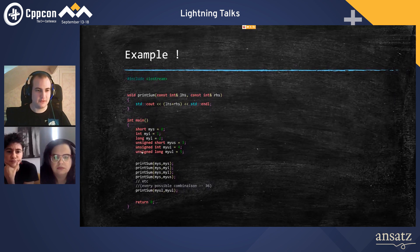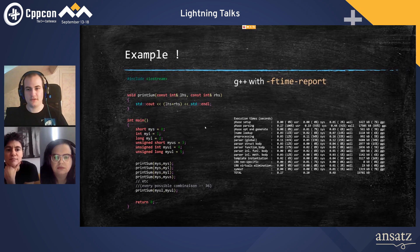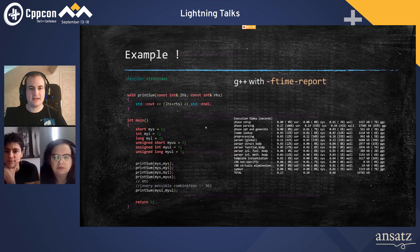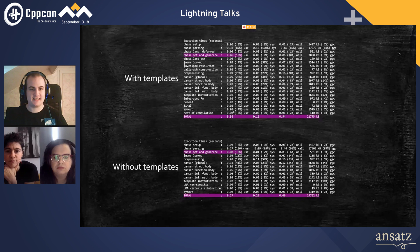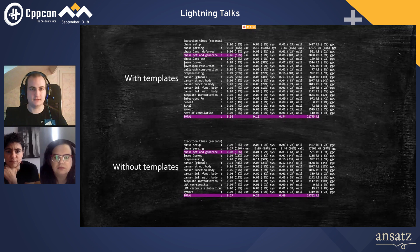Then I do the same with just a simple non-templated signature which implicitly converts the types. Casting a long into an int is not ideal, but since it's just five, we can do it. When I compare the results, I can see we gain a bit more time, the binary is a little smaller, and we can see what takes 20 percent of the compilation time — which is useful.